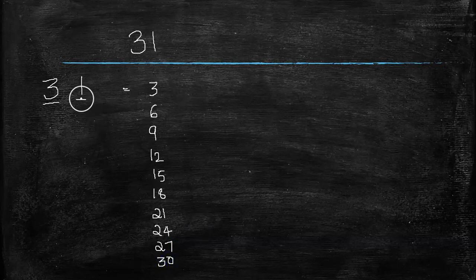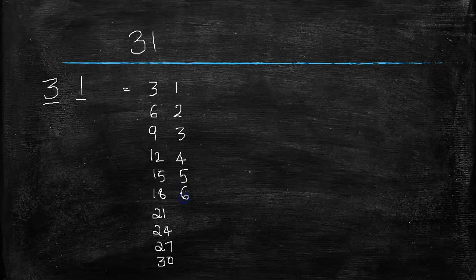Similarly, in the second part I have to write the 1 times table: 1 times 1 is 1, 1 times 2 is 2, 1 times 3 is 3, 1 times 4 is 4, 1 times 5 is 5, 1 times 6 is 6, 1 times 7 is 7.